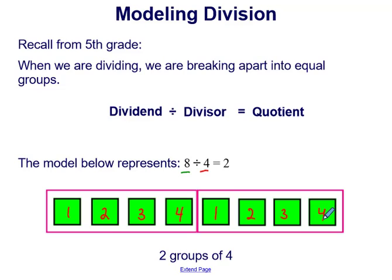So we have those 8 total squares. If we're breaking them down into groups of 4, we get that there are 2 groups. So that's why our quotient or answer of 8 divided by 4 would equal 2.